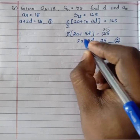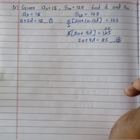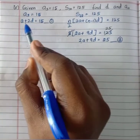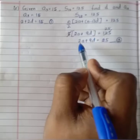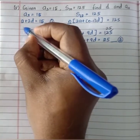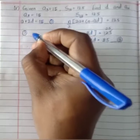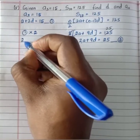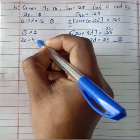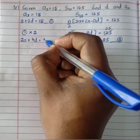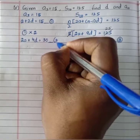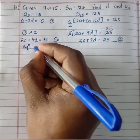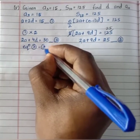We now have two equations in variables a and d: equation 1 is a plus 2d equals 15, and equation 2 is 2a plus 9d equals 25. To eliminate a, multiply equation 1 by 2 to get 2a plus 4d equals 30, calling this equation 3.